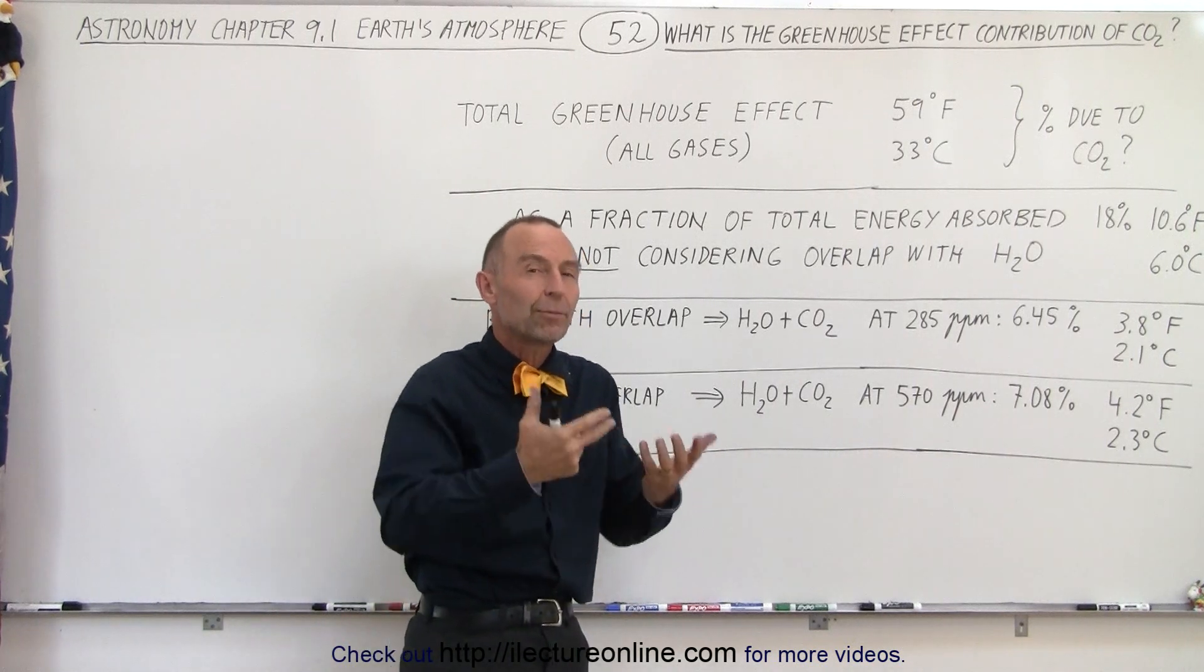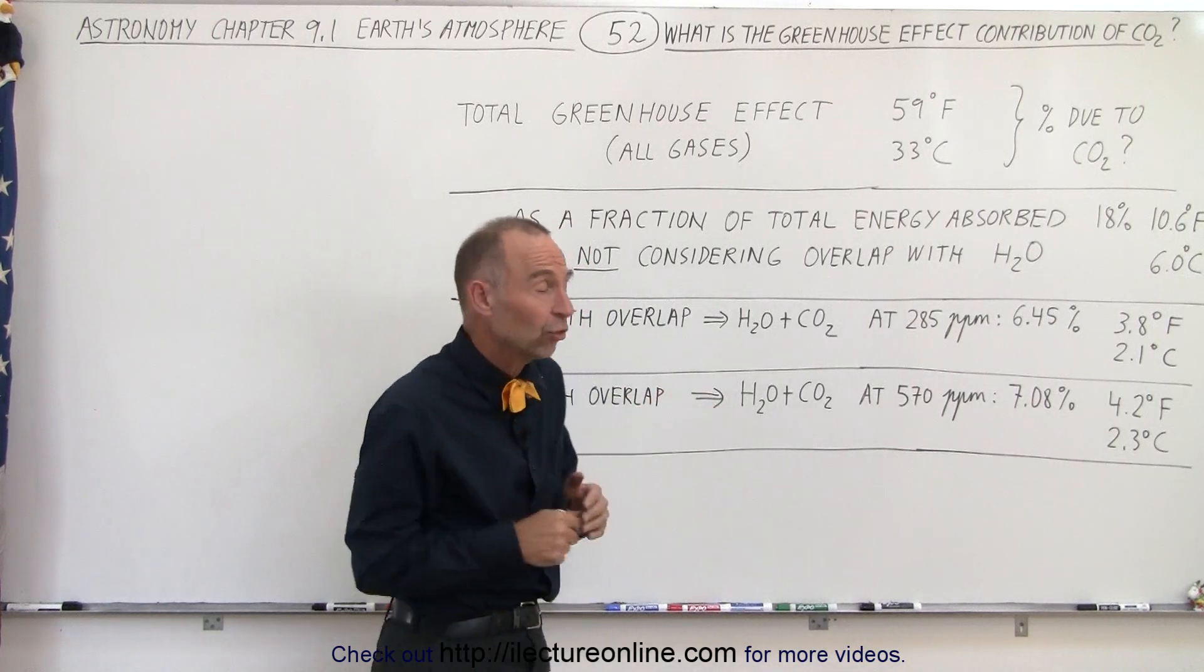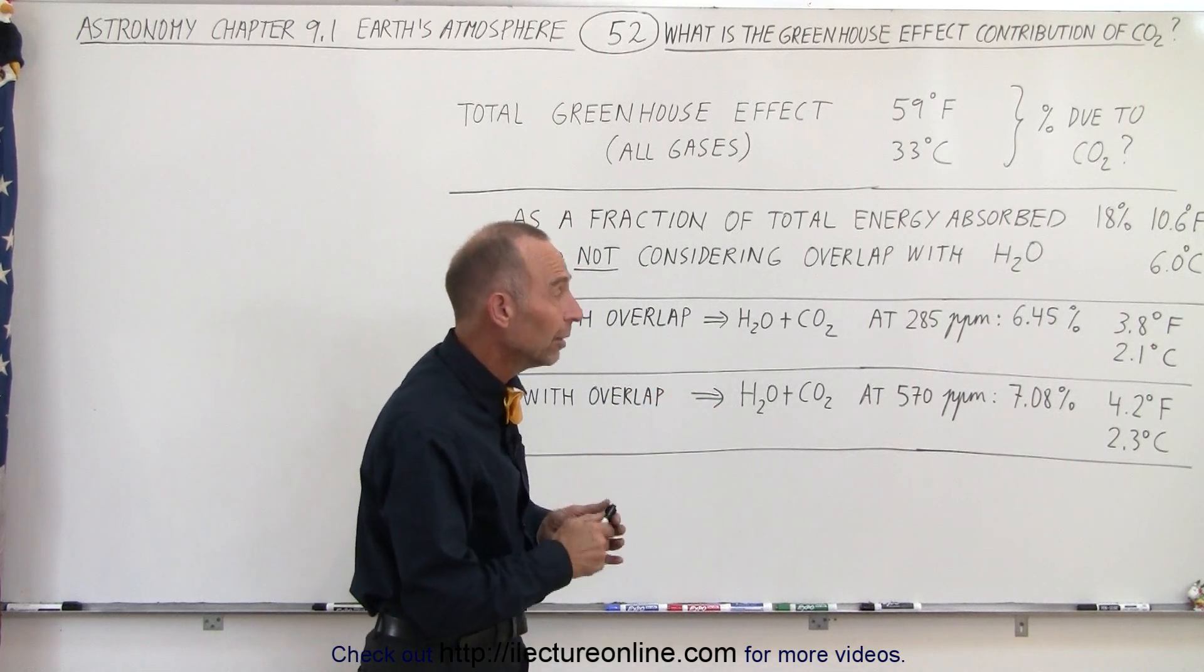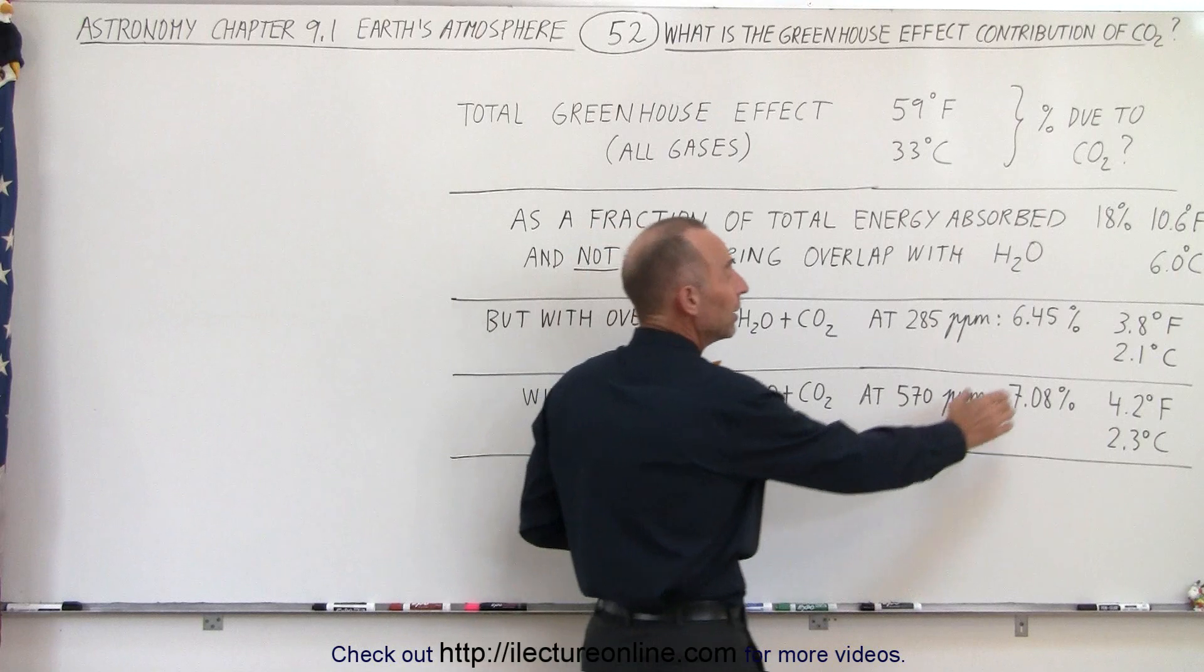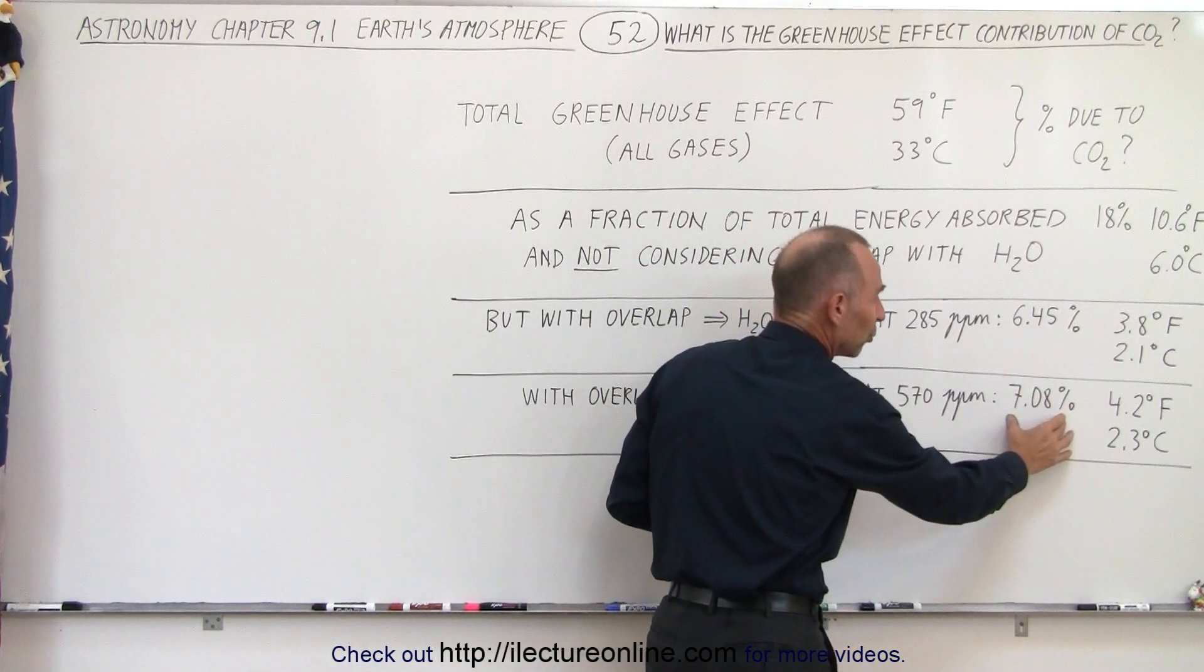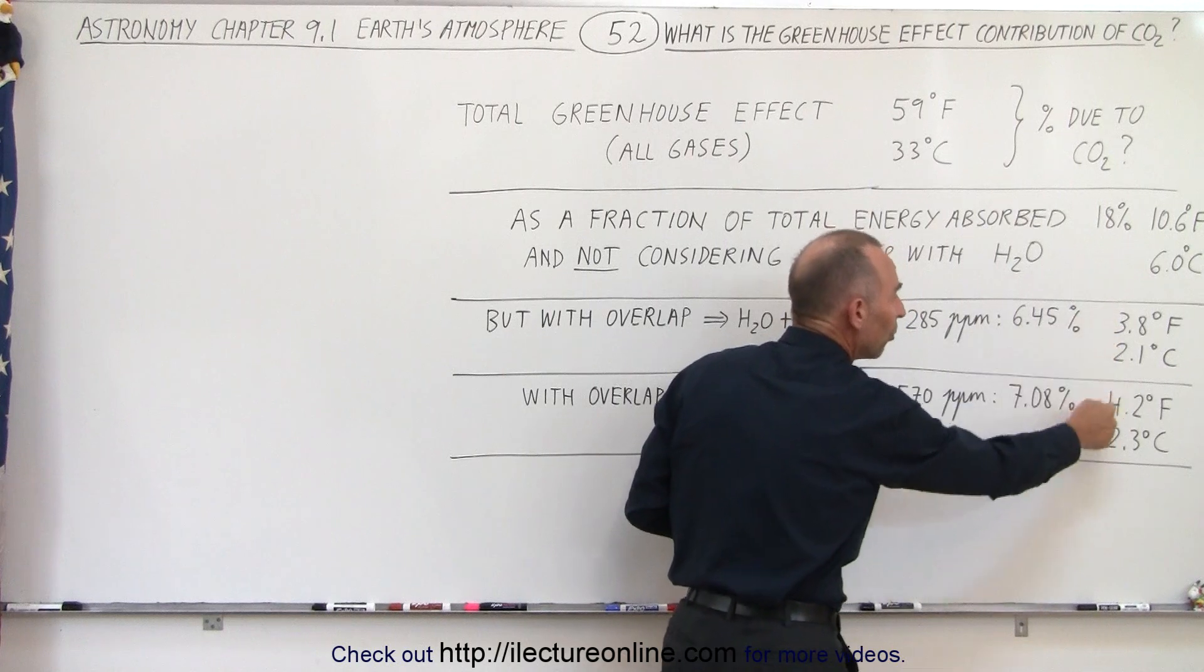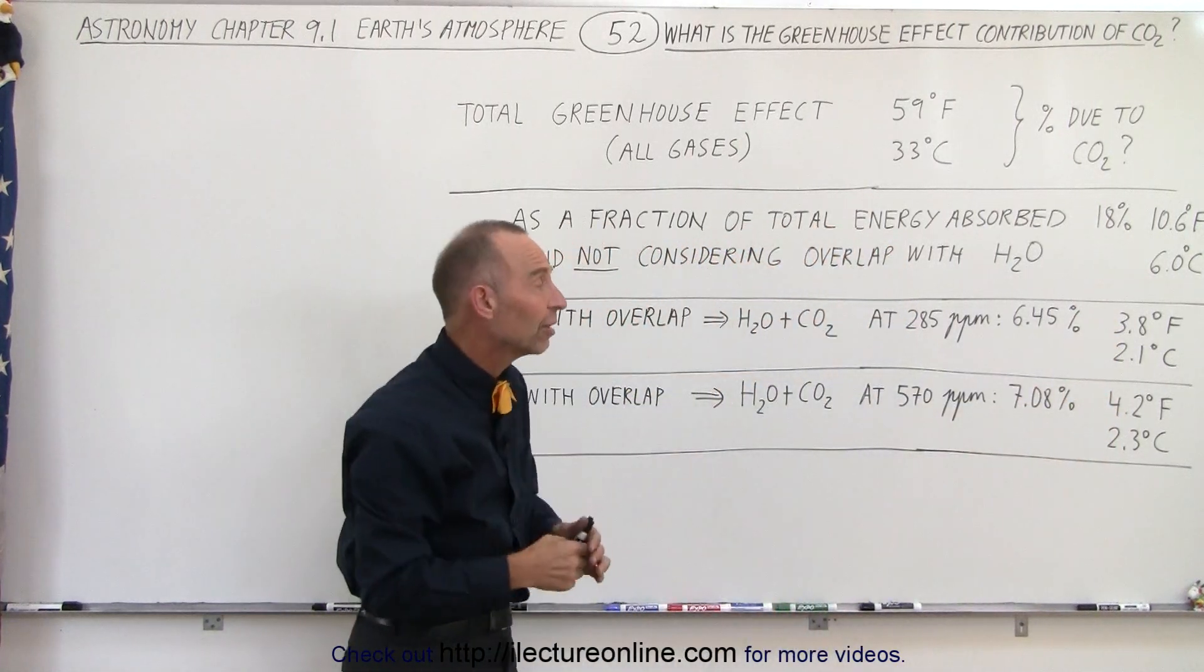So we'll take a look at that later, but if we ignore that for now, the increased contribution would go from six and a half percent to about 7.1 percent for an increase of 4.2 degrees Fahrenheit or 2.3 degrees centigrade. So basically almost a half degree Fahrenheit increase.